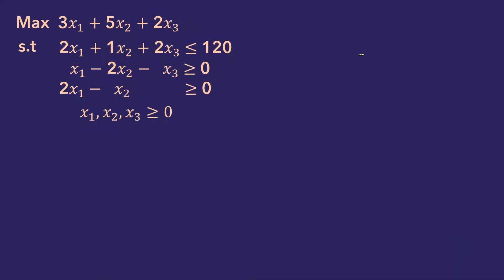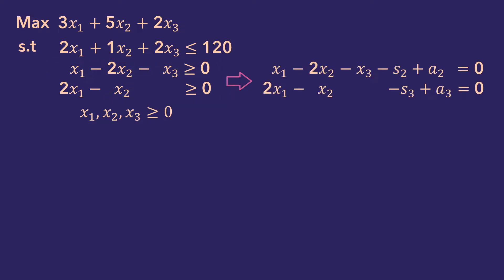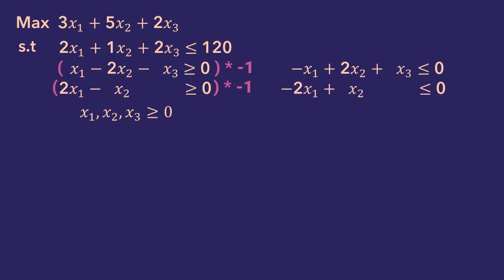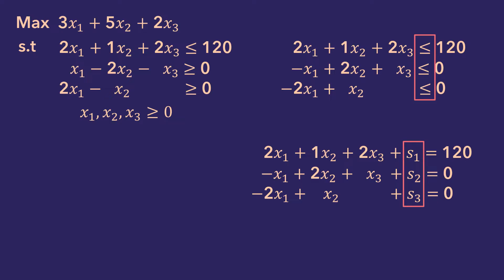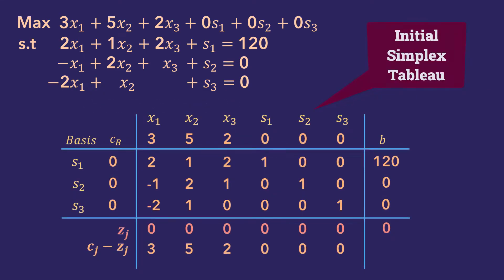For the third example, we have this LP model with one less-or-equal constraint and two greater constraints. Since both greater-than constraints have zero right-hand sides, we can take the opportunity to reverse the inequalities by multiplying both constraints by minus 1. That will convert the greater-than inequalities to less-than without leaving us with negative right-hand sides. Hence, no artificial variables are required. Together with the first constraint, we now have three less-than constraints, so we only need three slack variables. All variables are non-negative, and in the objective function we add slack variables with zero coefficients. The resulting initial tableau will thus be as shown here.